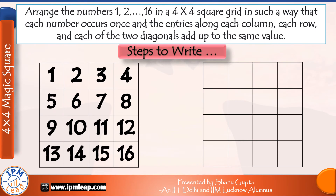Let's move on to a 4x4 magic square. How do we create a 4x4 magic square effortlessly? Just like we did in the previous case, we write all numbers from 1 to 16 sequentially along a square grid: 1, 2, 3, and 4 in the first row; 5, 6, 7, and 8 in the second row; 9, 10, 11, and 12 in the third row; and 13, 14, 15, and 16 in the fourth row.